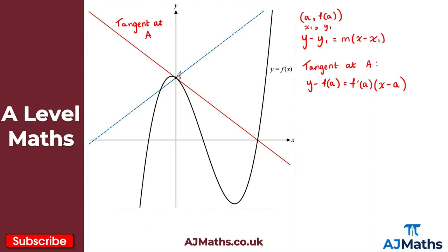The blue dotted line represents our normal at a. For the normal, the only thing that's really different is the gradient, because the tangent and normal are perpendicular — we can see that from the right angle. So all I need to do is take the gradient f prime of a and take the negative reciprocal. So everything else remains the same: y minus f of a equals minus 1 over f prime of a, times x minus a.